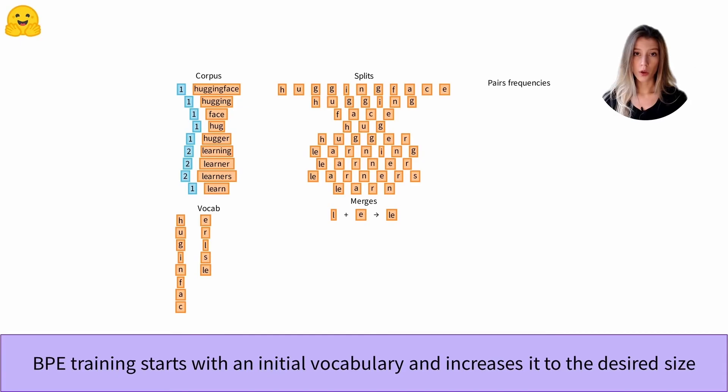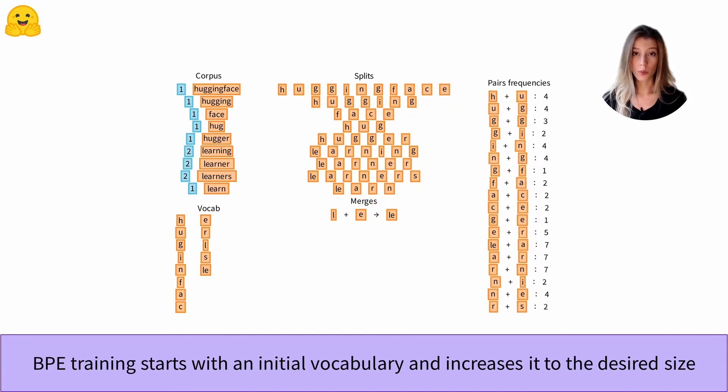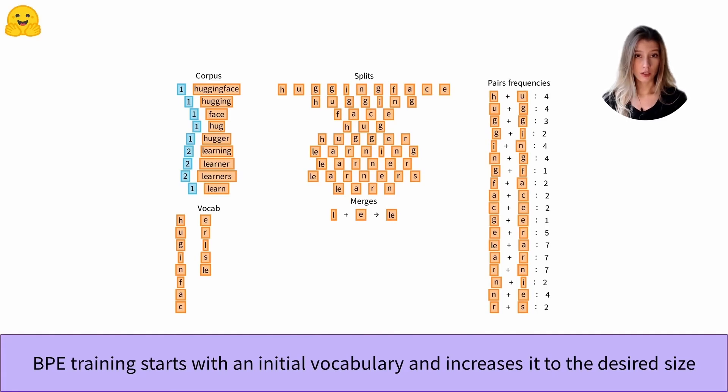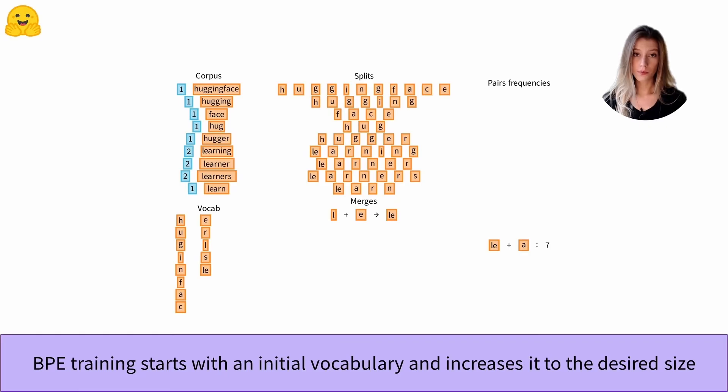And now we just have to reproduce the same steps with our new splits. We calculate the frequency of occurrence of each pair of tokens and we select the pair with the highest frequency.